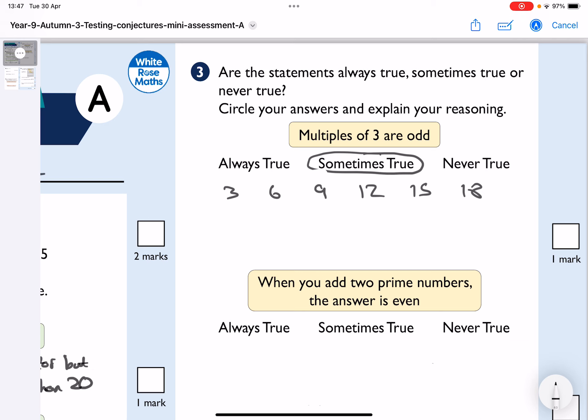And what I can see is that three is odd, nine is odd, fifteen is odd, but six is even, twelve is even, and eighteen is even. So, when I look at it, it is sometimes true.